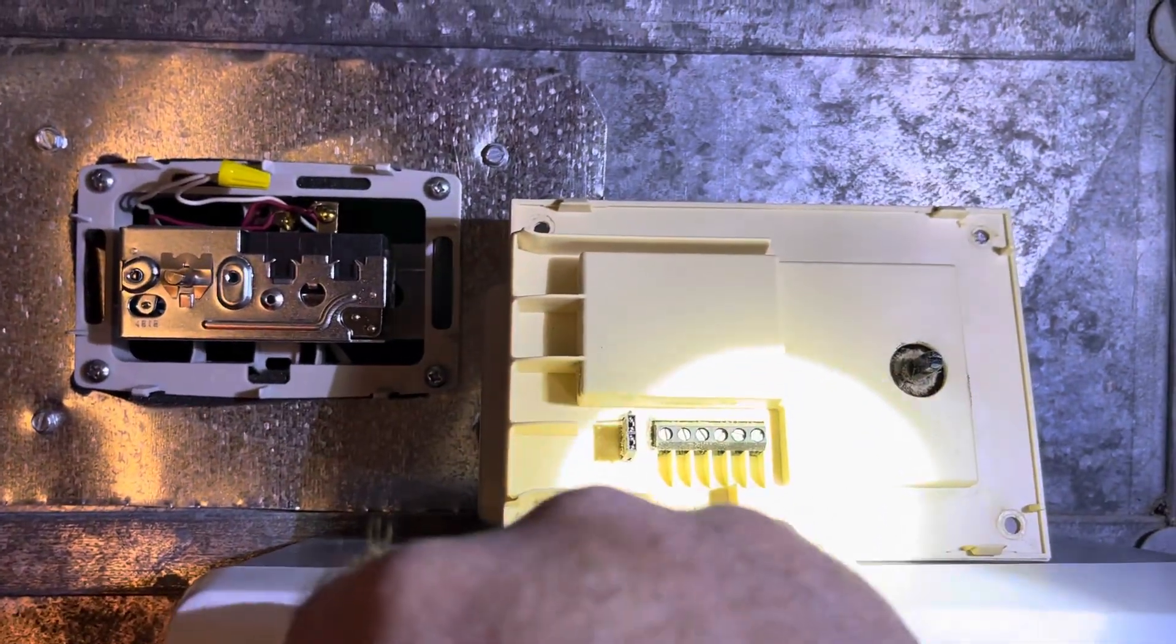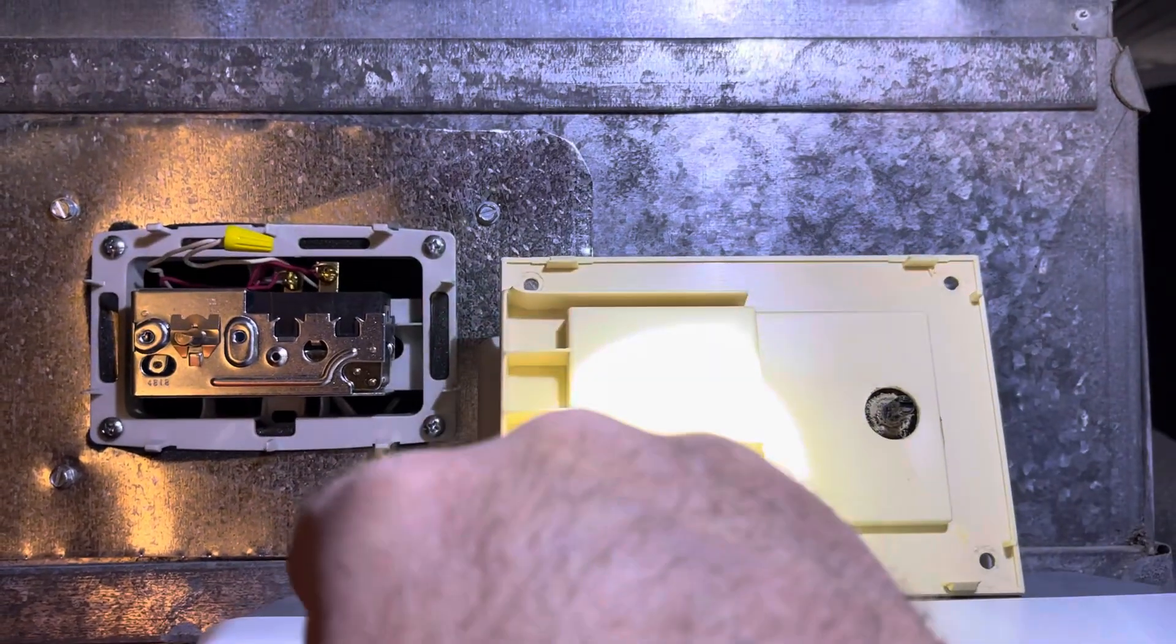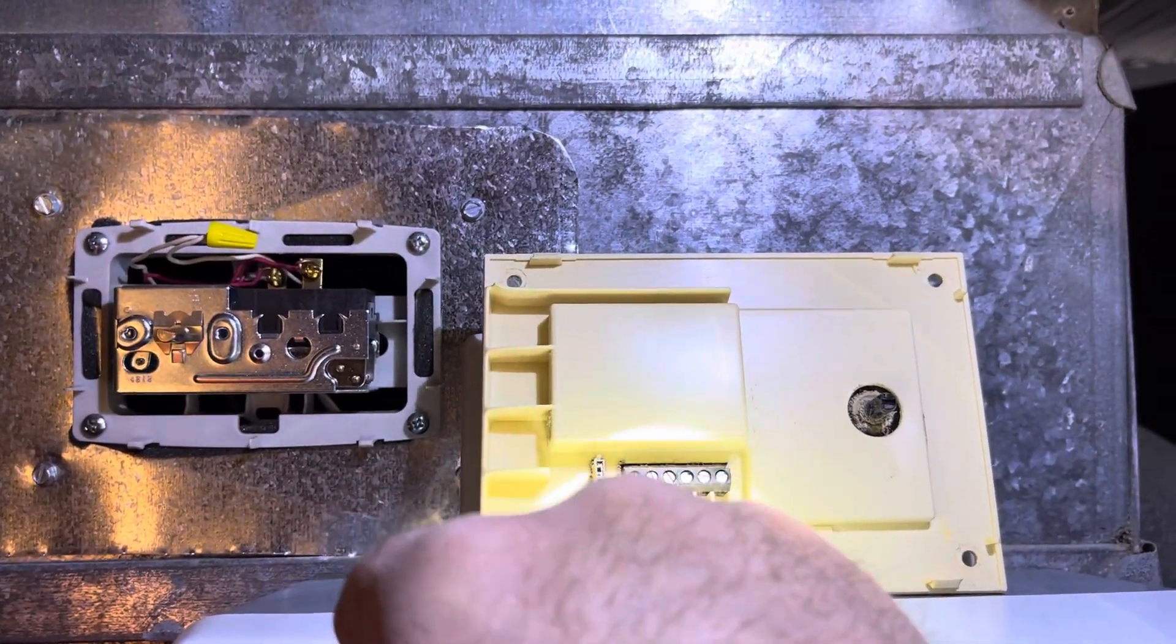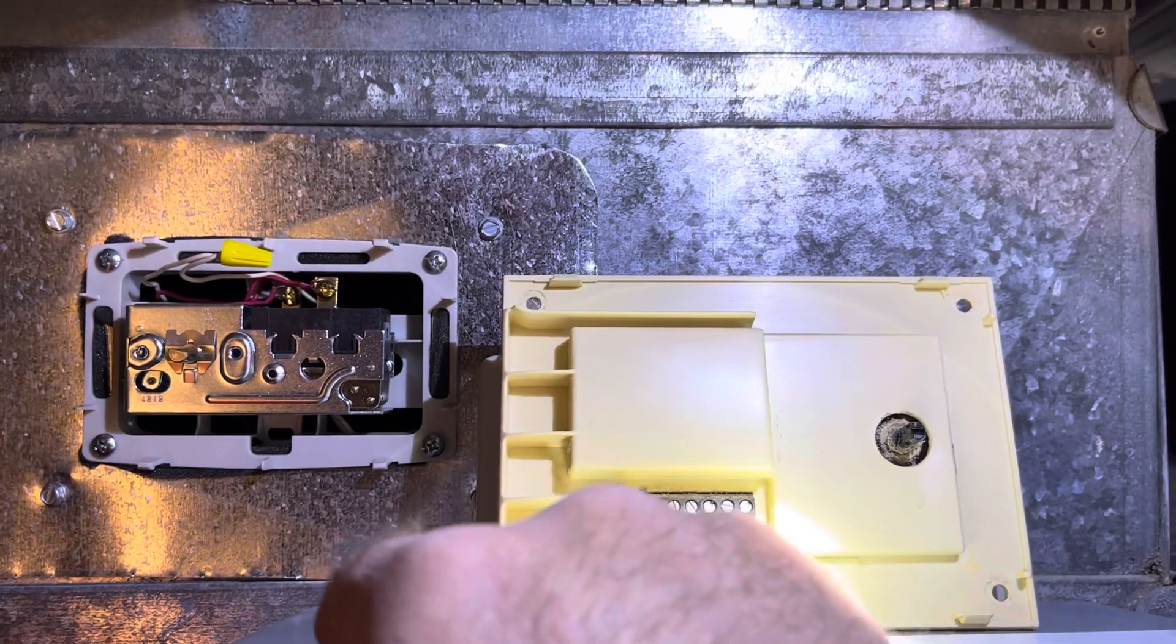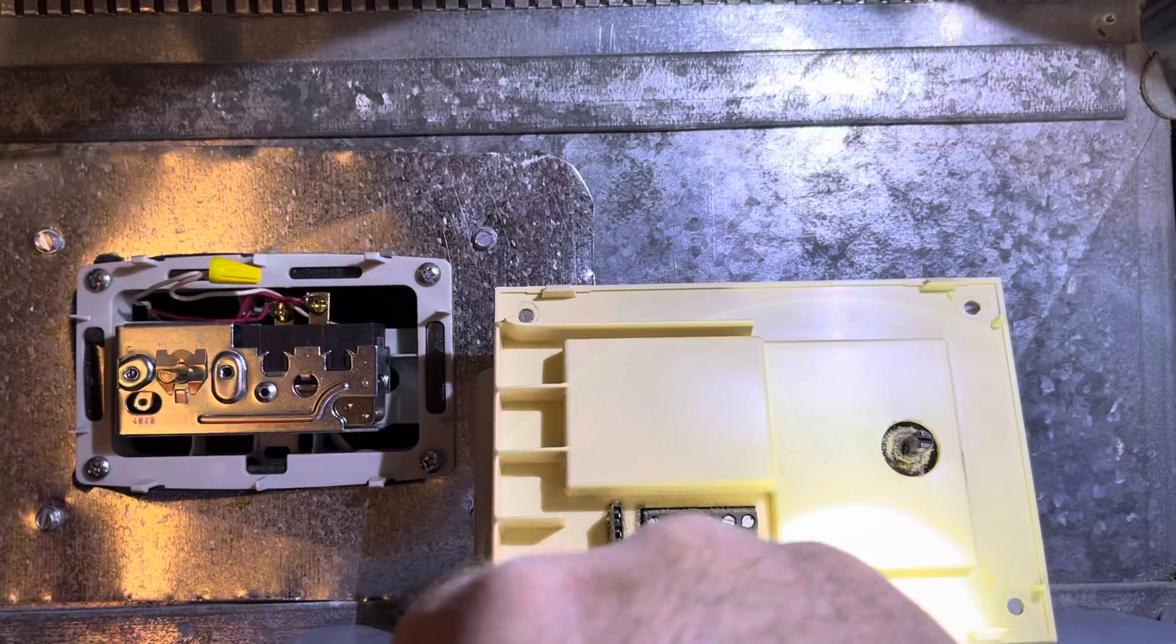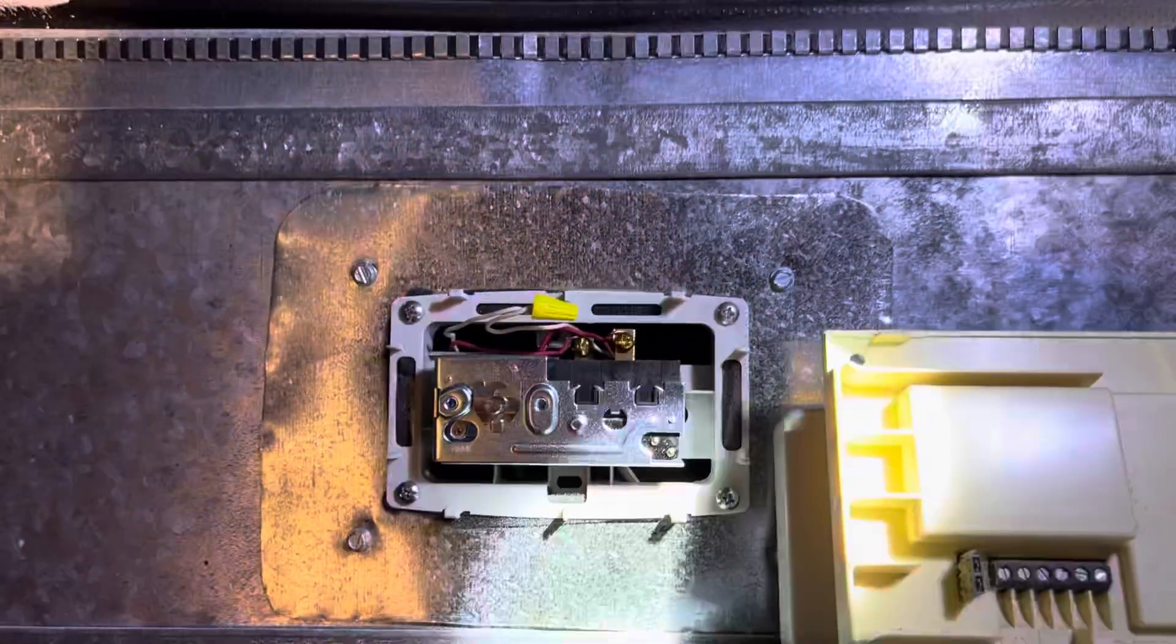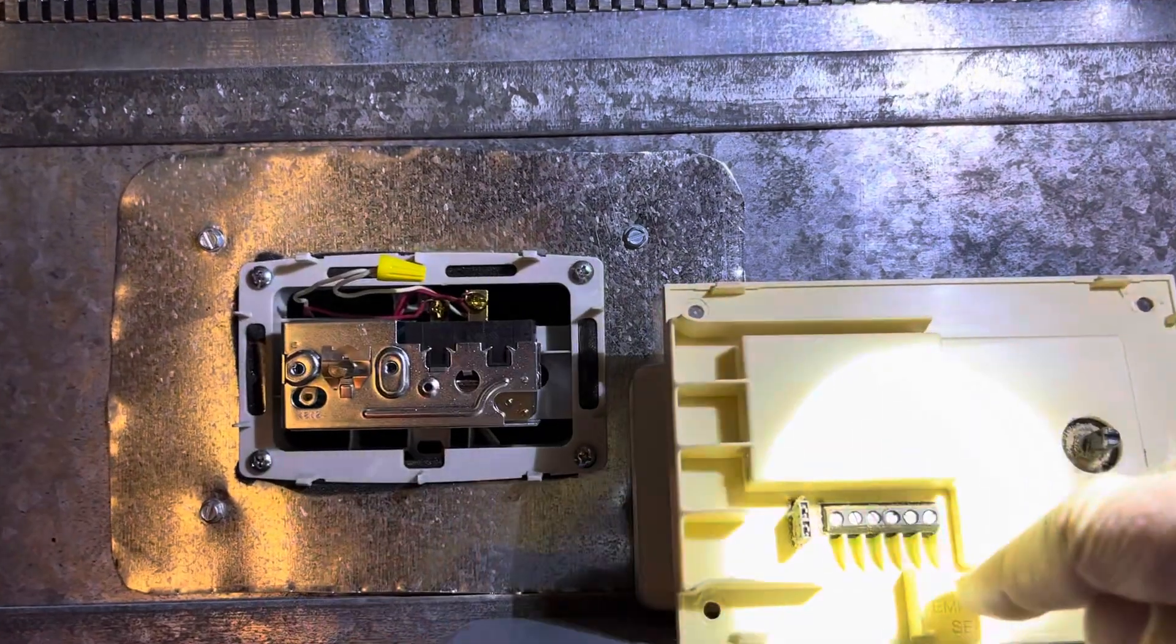And like I said, I'm not an electrician, but you can see here they have a 24 volt coming in and another 24 volt, a red and white wire, which is the red that's hot, white common. And then they had an outdoor temperature sensor, which wasn't a feature on the new one, so we removed that wire.